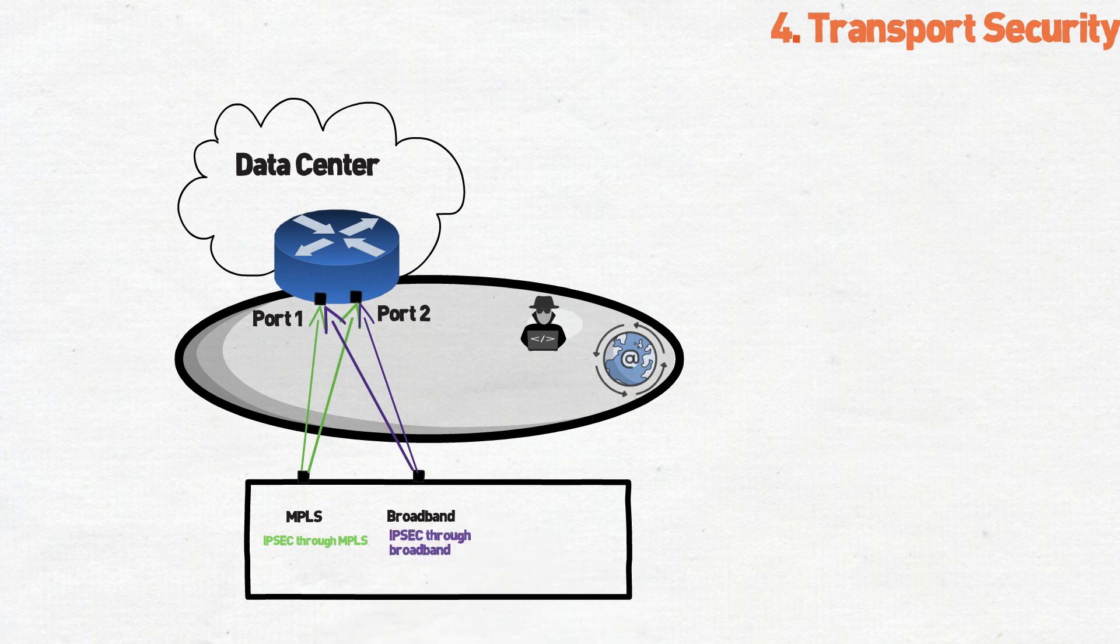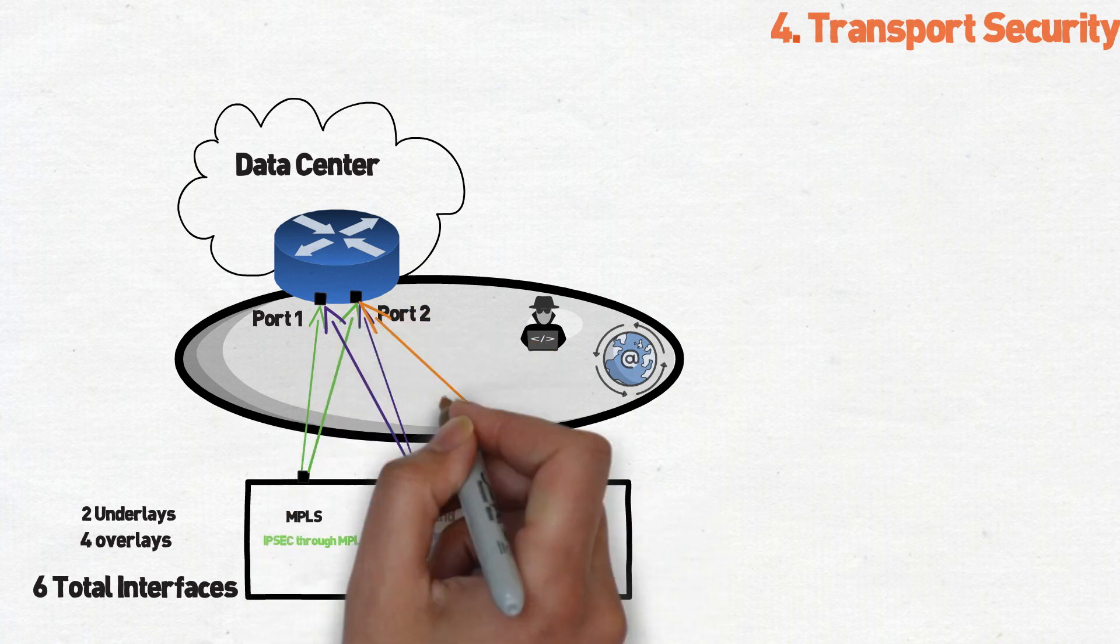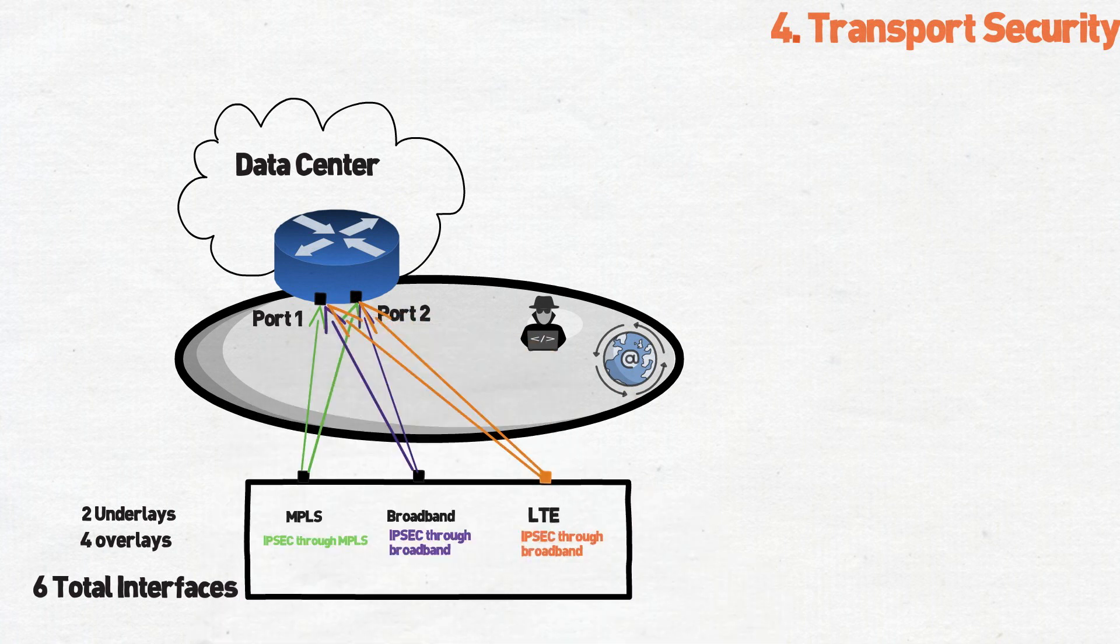So you can see that even in this most basic setup, we already have four IPsec tunnels. And if you have a backup LTE or 4G card, consider using an on-demand IPsec tunnel that will only come up when the other ports are down. This is going to save you on mobile data charges.